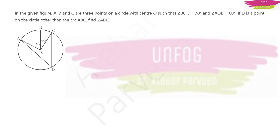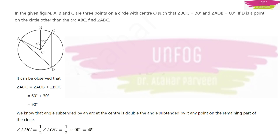Next example: A, B, and C are three points on a circle with center O, such that angle BOC equals 30 degrees and angle AOB equals 60 degrees. D is a point on the circle other than arc ABC — find angle ADC. Here, angle AOC equals angle AOB plus angle BOC, which gives 60 plus 30 equals 90 degrees. Since the angle at the center is double the angle at the circumference, angle ADC is half of 90 degrees, which equals 45 degrees.